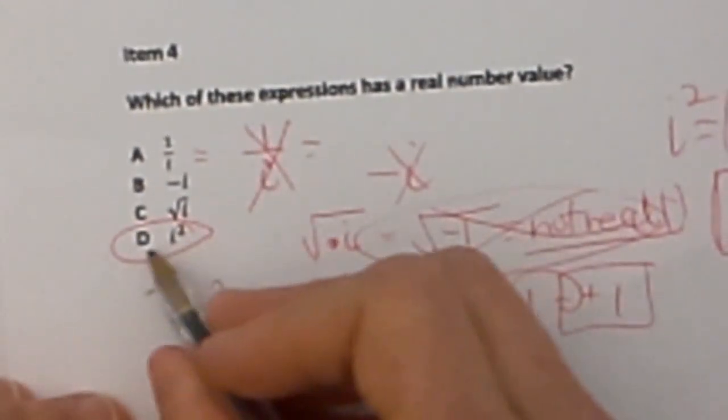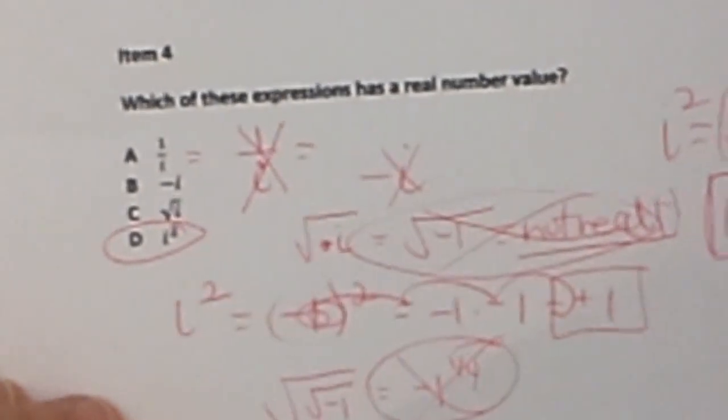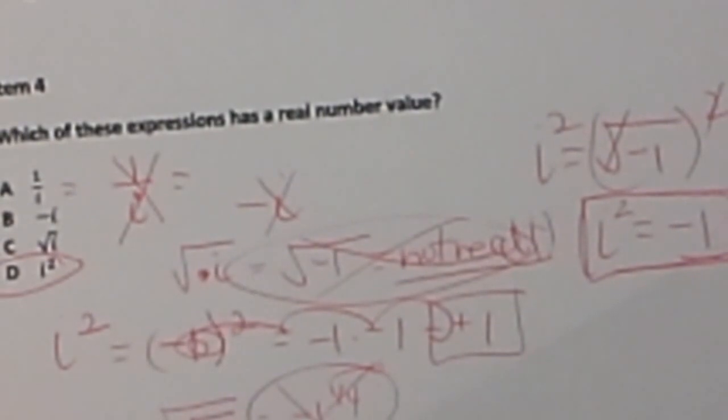When you square the square root of negative 1, you get negative 1, which is the real answer. Hopefully this video was helpful on going through those first 4 questions.